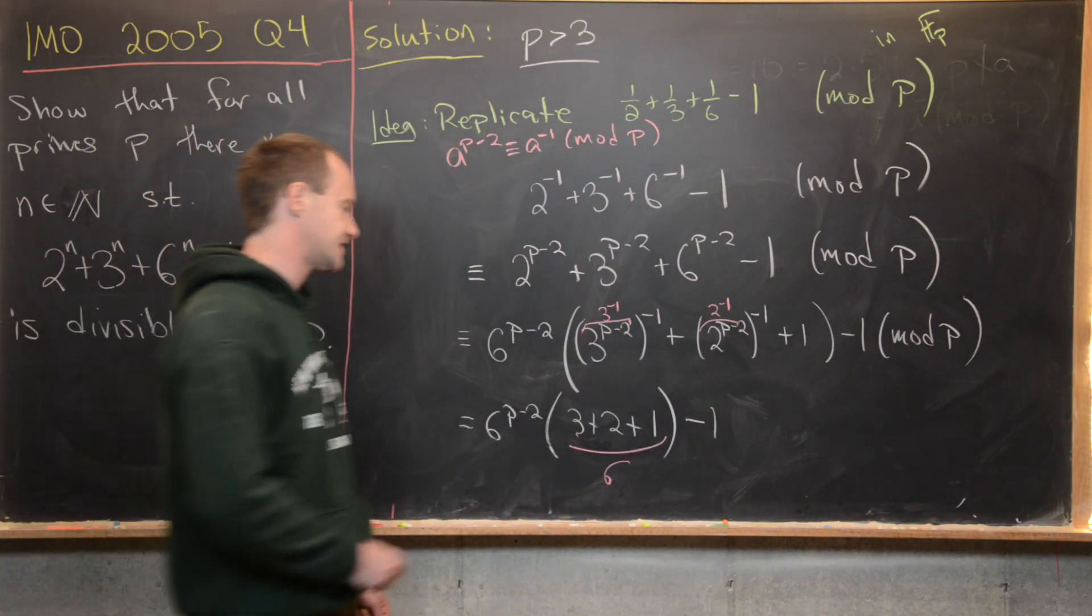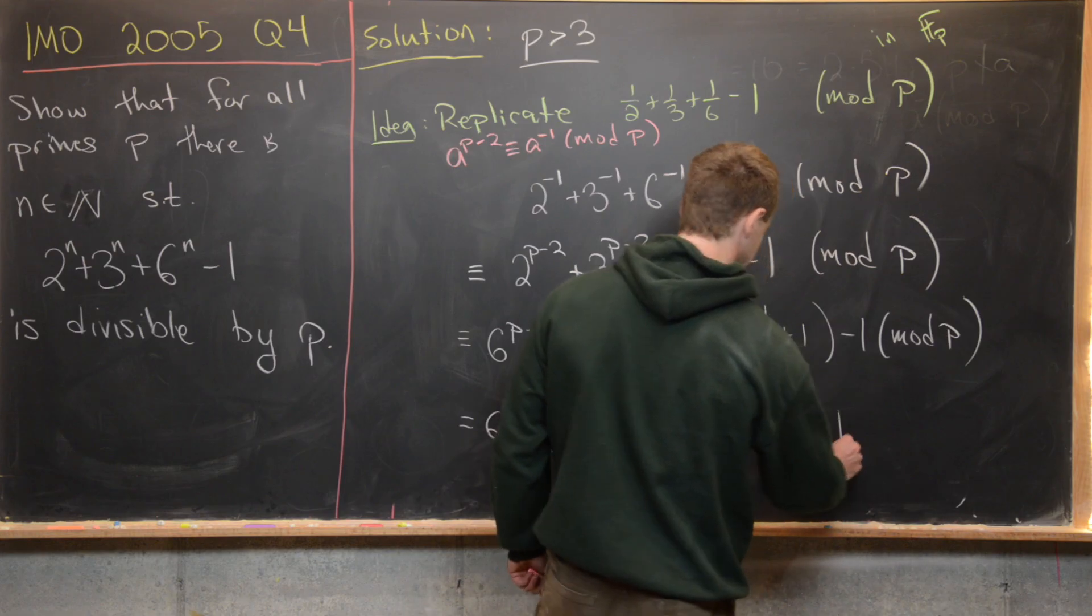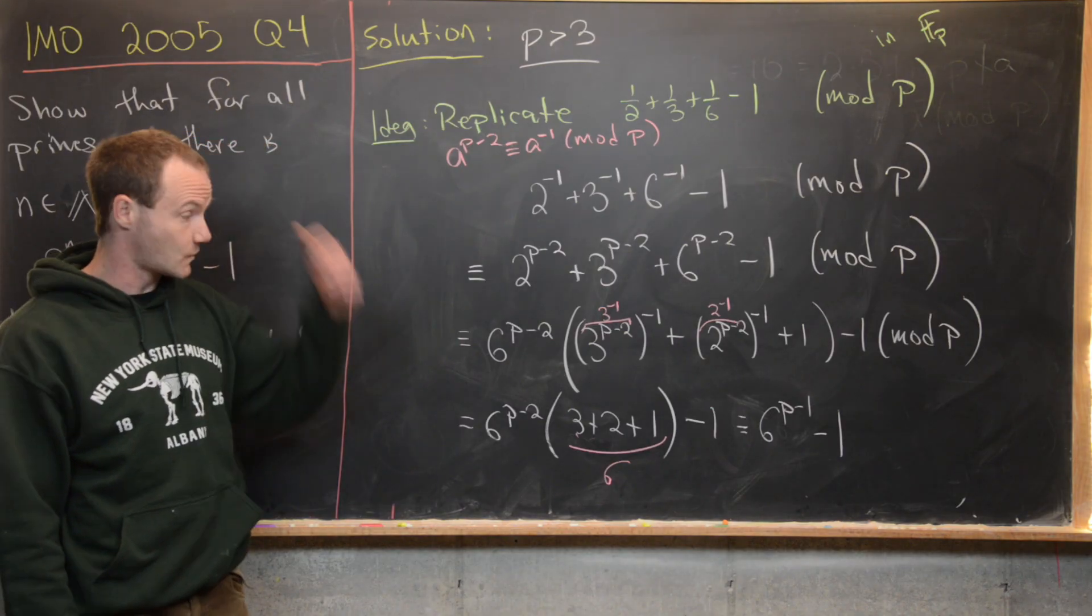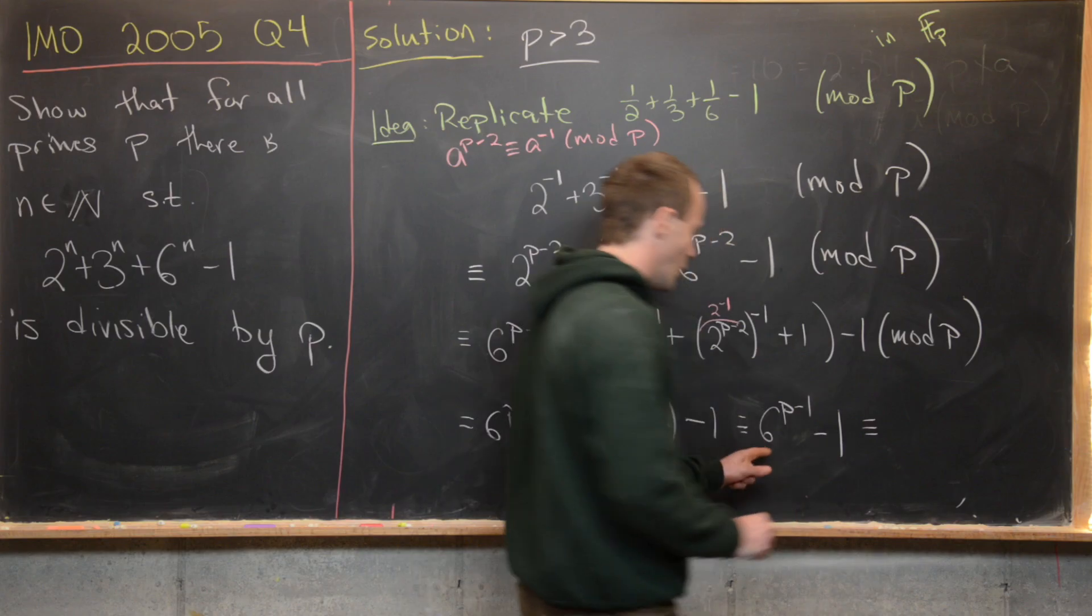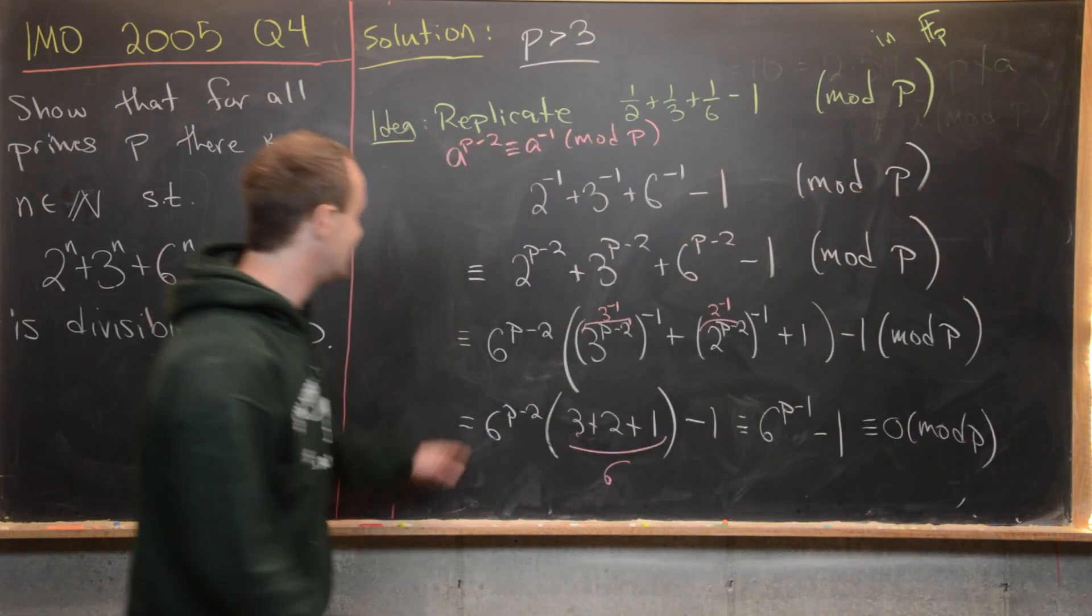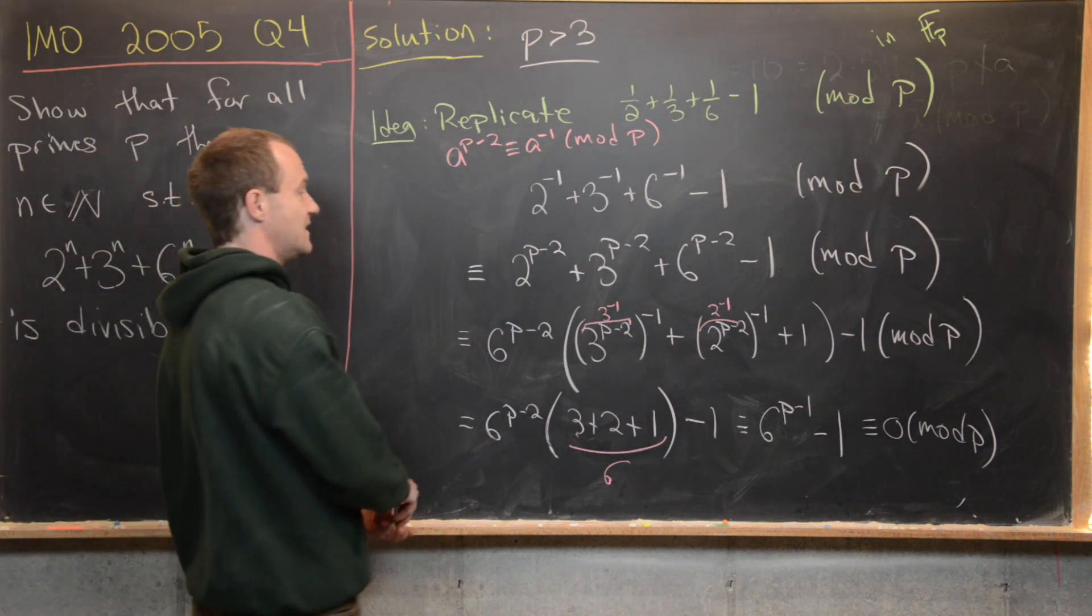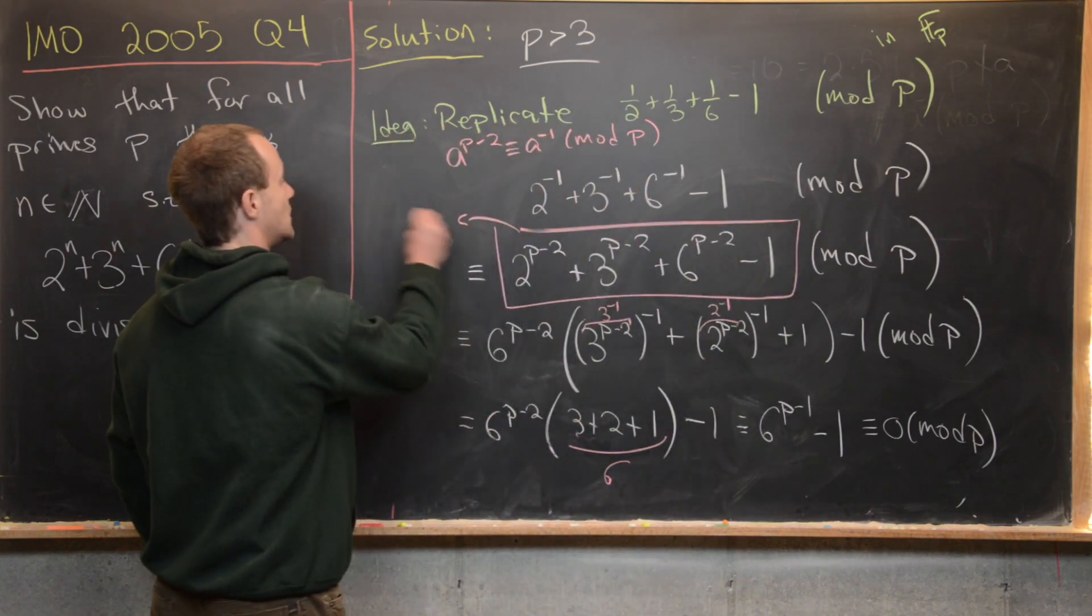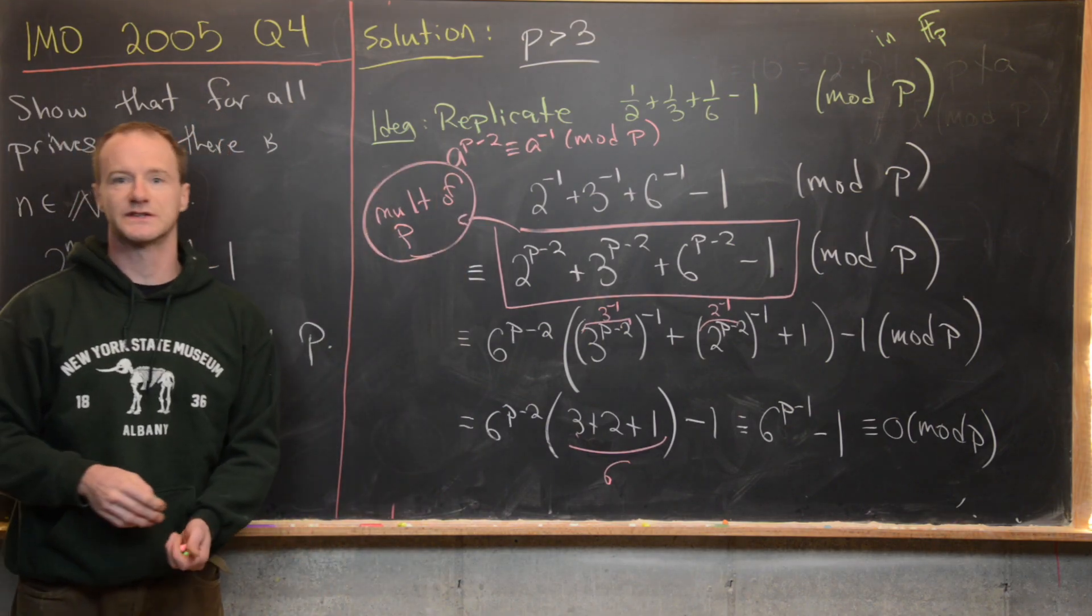But then by Fermat's little theorem we know 6^(p-1) is congruent to 1 mod p, so that means we have 1 - 1 mod p, or we have 0 mod p. So in the end, what that tells us is that this object right here is a multiple of p, and that's a good place to stop.